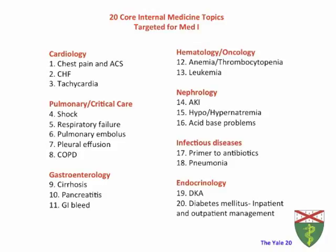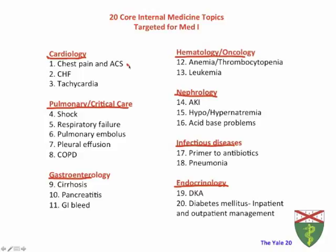Here are the 20 core topics for your Med 1 rotation, structured across different areas of medicine. In cardiology, we cover chest pain and acute coronary syndrome — a very common admission — as well as congestive heart failure, since you'll see many patients admitted for shortness of breath with CHF. We also cover tachycardia: a general framework for approaching a patient with a fast heart rate, how to decide if they need the cardiac care unit, and first treatment options depending on the type of tachycardia.